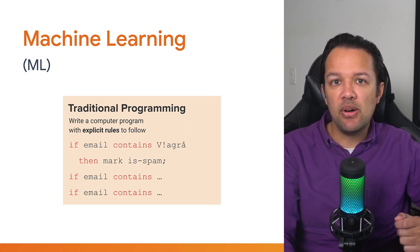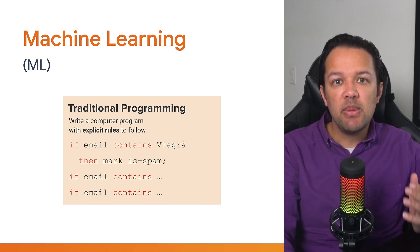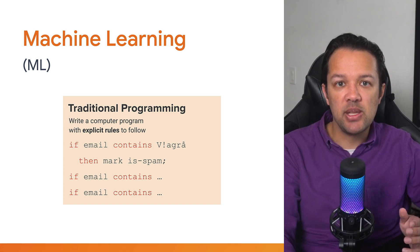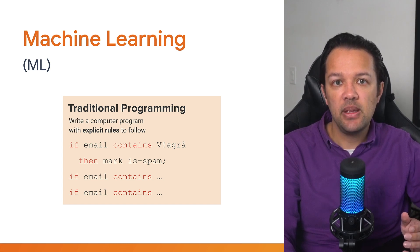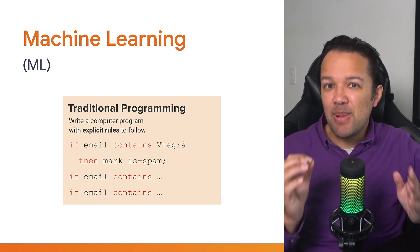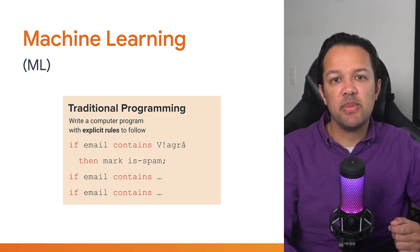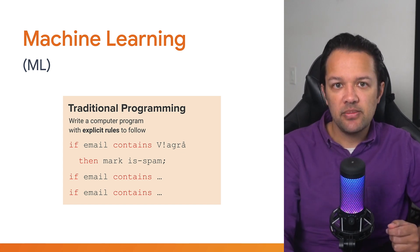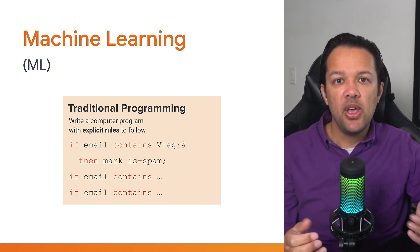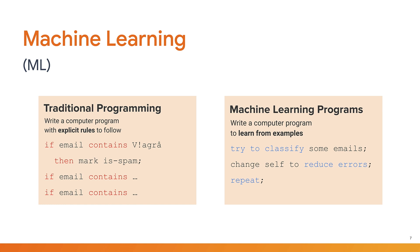Take spam email as an example. With traditional programming, you may have had a bunch of conditionals or lookups to check if a word was associated with spam. If it was, you would block the email. However, the spammer can get savvy of this, modify the word just slightly, and the system is then broken. Thus, a tug of war between spammer and programmer develops, which is not a good use of your time.